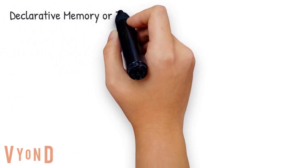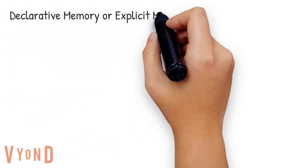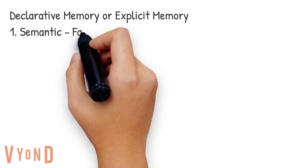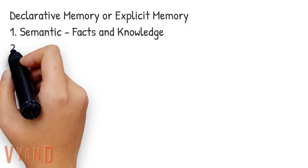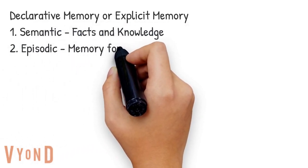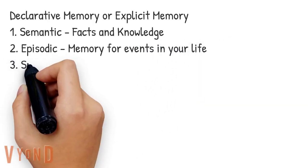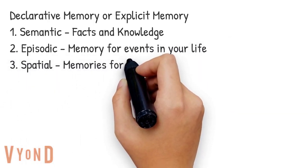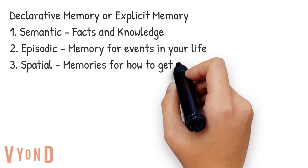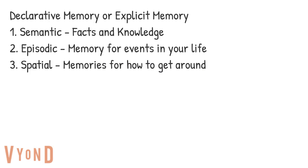So a quick review. Declarative or explicit memory is memory you consciously have to retrieve from your long-term memory. It includes semantic memory — memory for facts and general knowledge, like George Washington being the first president. Episodic memory is memory for events in your life, like your memory of your 15th birthday party. And spatial memory is memory for how to get around, such as knowing how to get from your house to the grocery store.